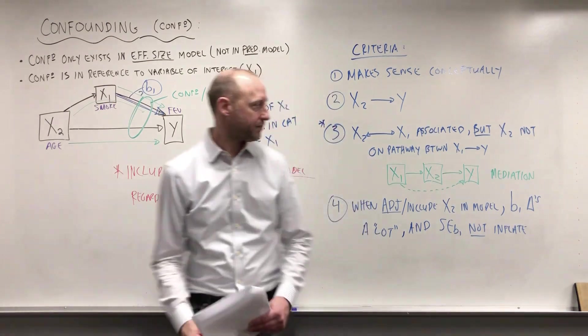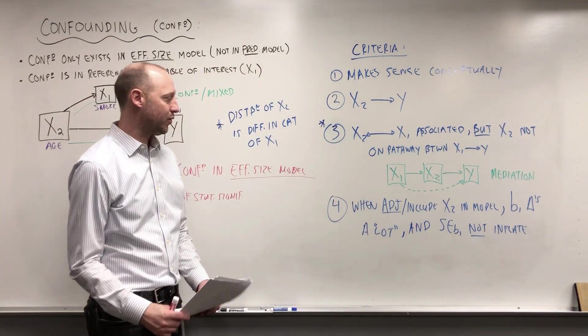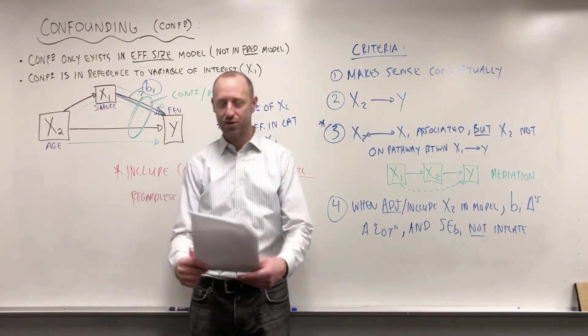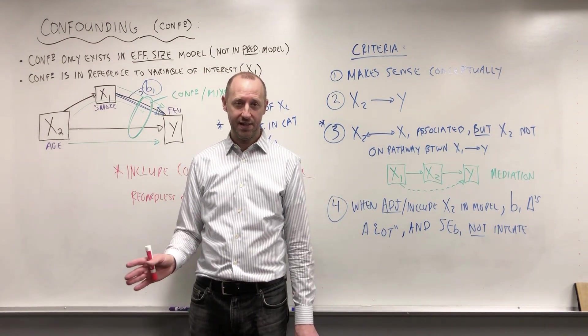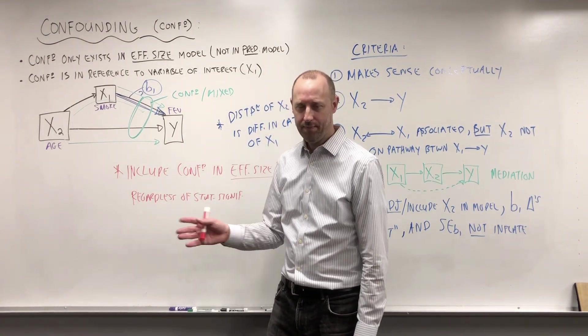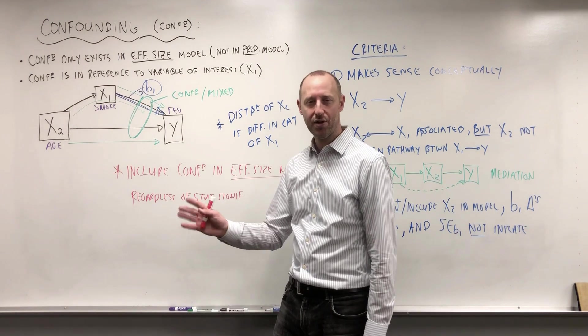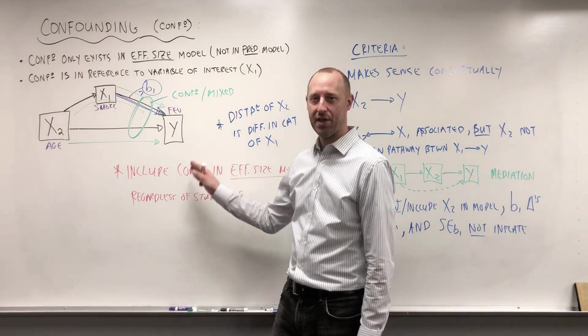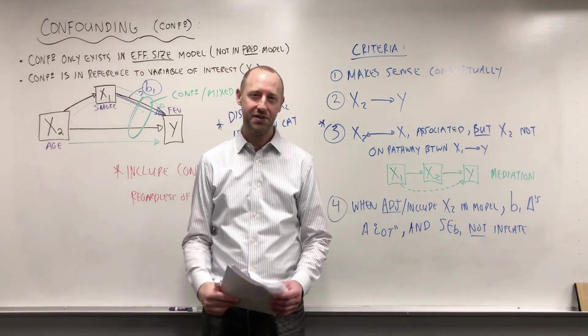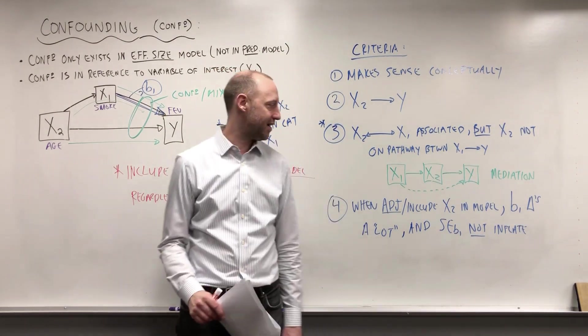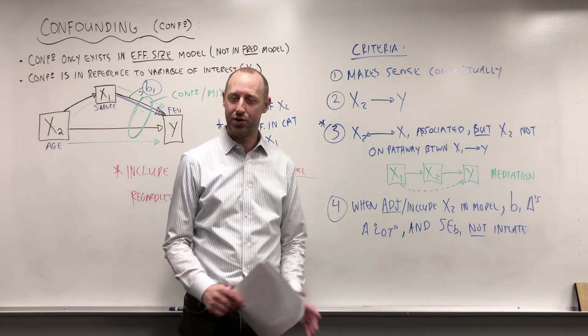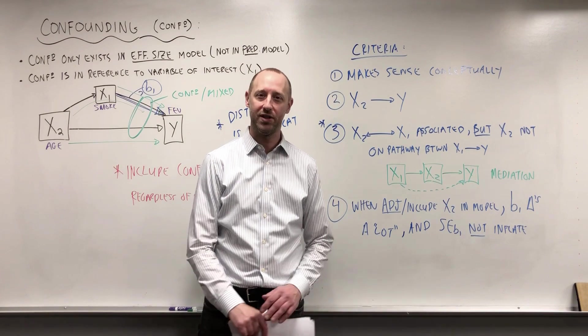The final thing I wanted to say was, we're going to focus a lot in this course on addressing confounding through statistical adjustment, but it can be addressed at the study design stage. We can do matching or restricted analysis or other approaches to try and address potential confounders when collecting the data. We're going to focus a little bit more on the statistical side of things, not the design side. Once we have some data, if there's confounding, how can we try and address it and adjust for it in the modeling stage?